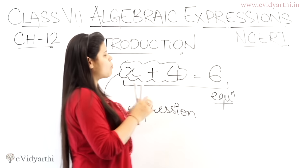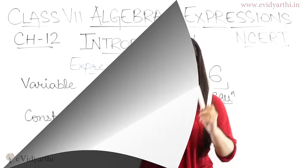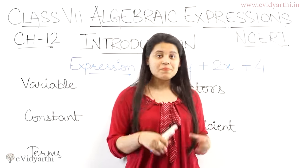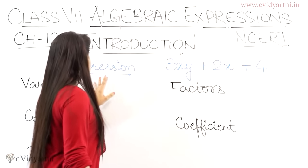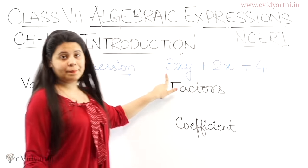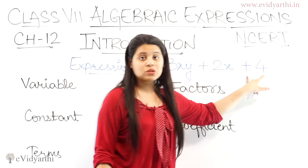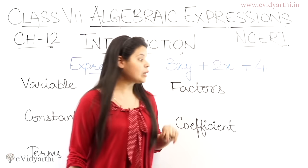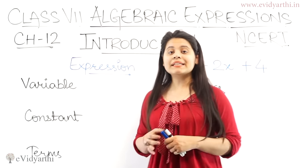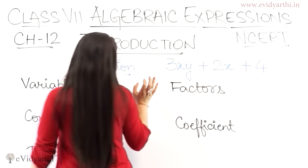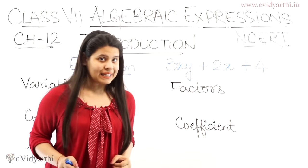Terms kya hoota hai? There are many terms in an expression. Let's discuss those terms. Let's discuss these concepts — these small concepts form the basis of questions you will get. First, let's understand what an expression is. For example, 3xy plus 2x plus 4 — this is an expression. So first concept is: variable. Variable kya hoota hai? Kisi bhi expression ke bich mein jo alphabets hote hai — like x, y — ye iske variables hai.